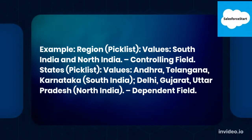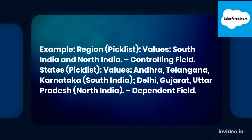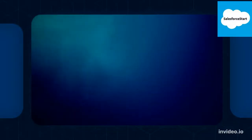Example: Region (picklist) with values South India and North India — this is the controlling field. States (picklist) with values Andhra, Telangana, Karnataka (South India) and Delhi, Gujarat, Uttar Pradesh (North India) — this is the dependent field.